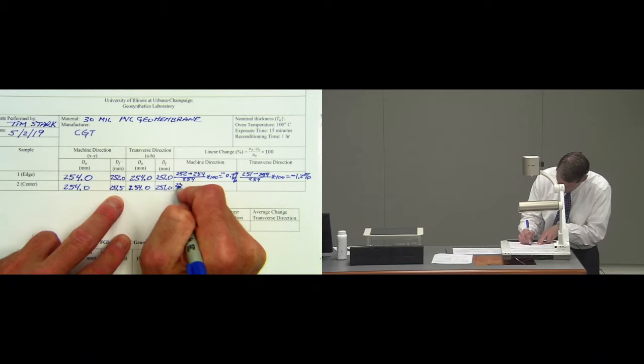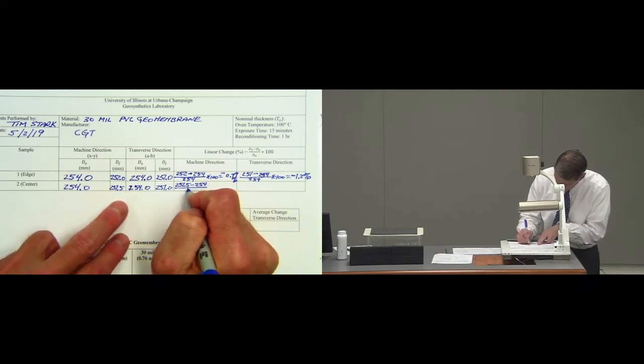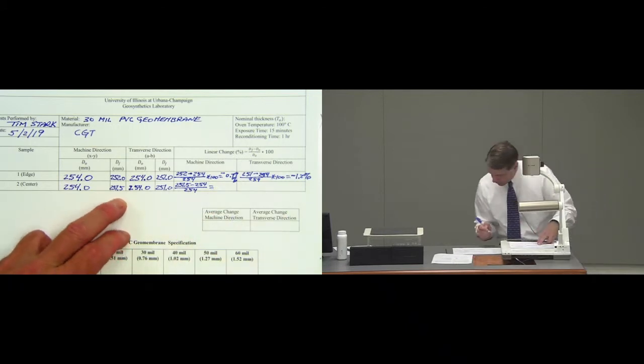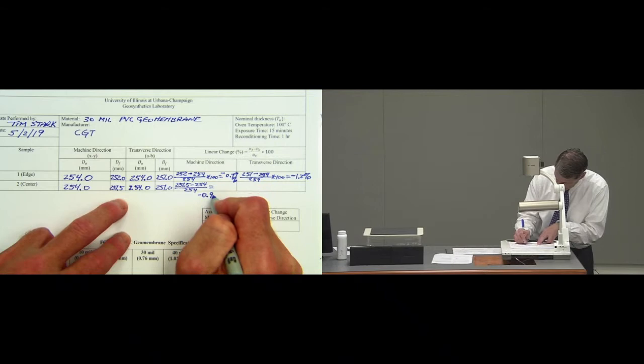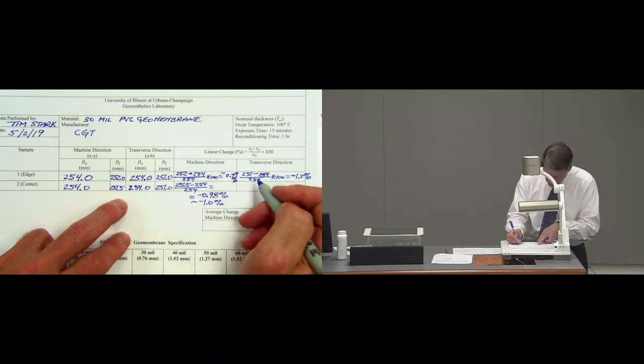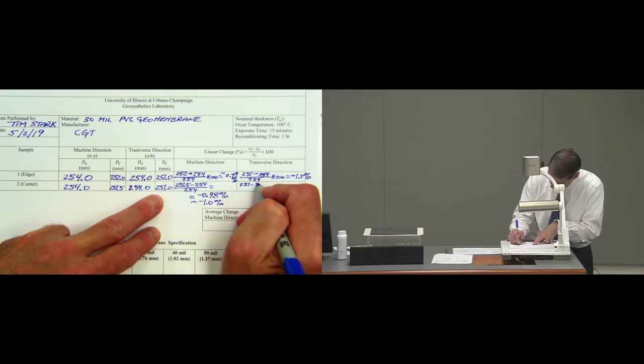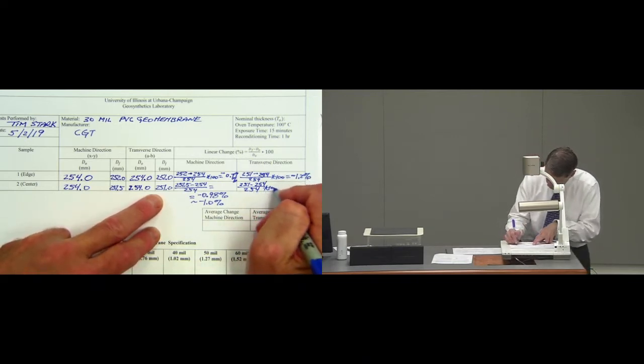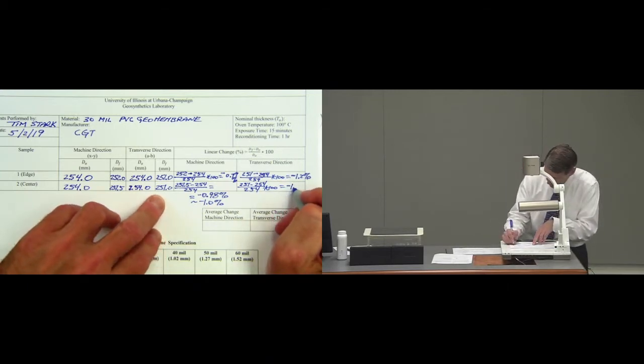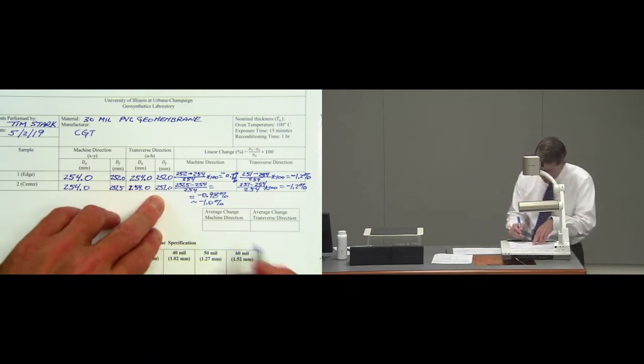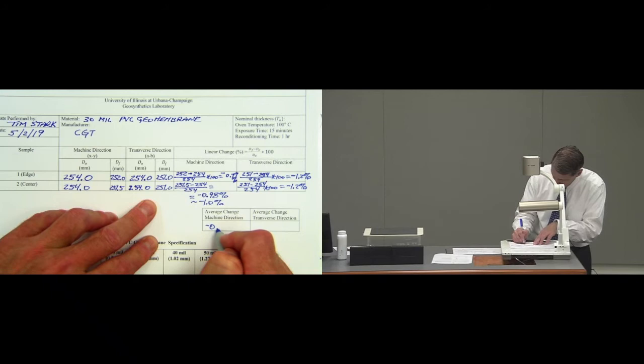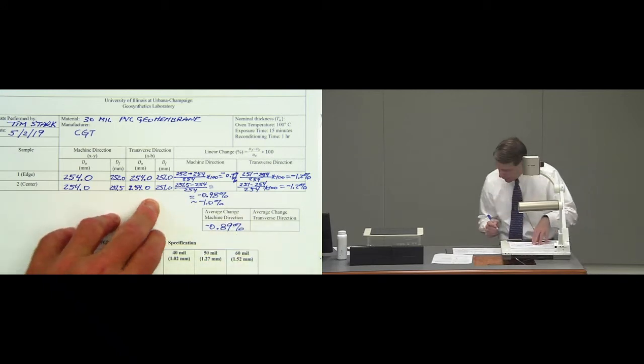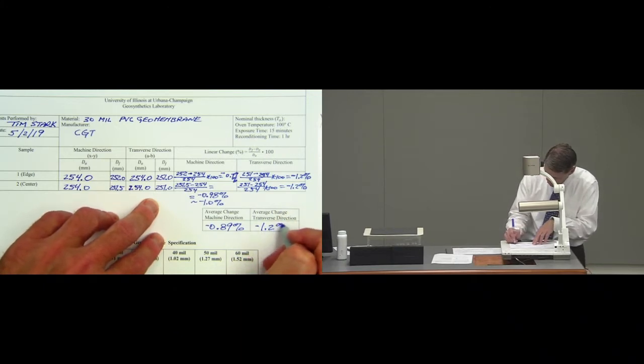251 minus 254 divided by 254 and that gives me minus 0.98 percent. And then in the transverse direction it's 251 minus 254 times 100 is again minus 1.2 percent. So the average change in the machine direction is minus 0.89 percent and in the transverse direction minus 1.2 percent.